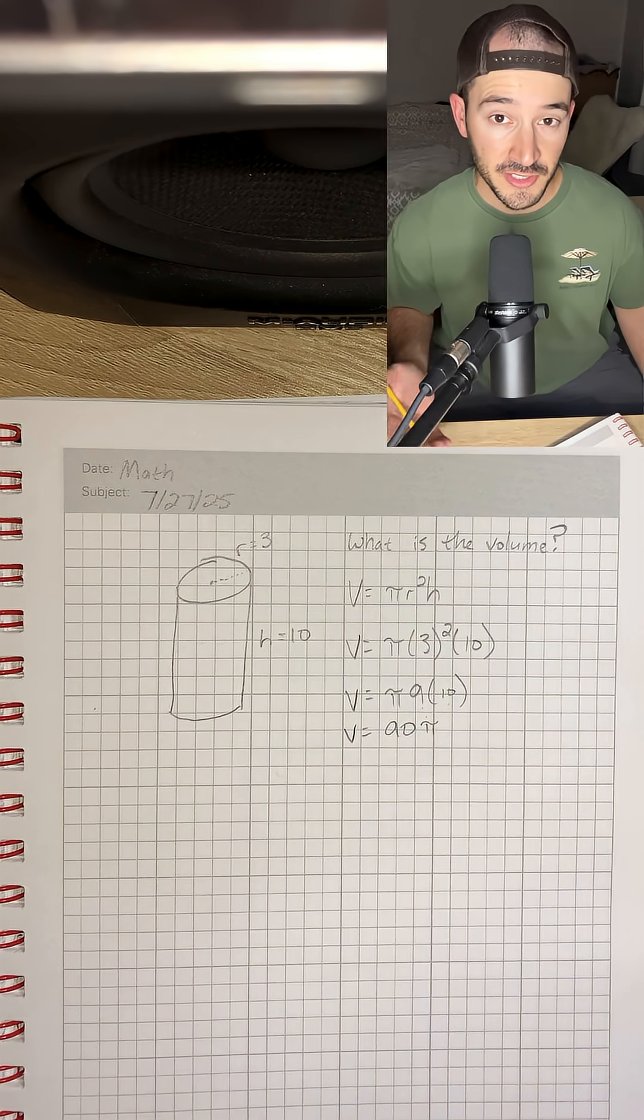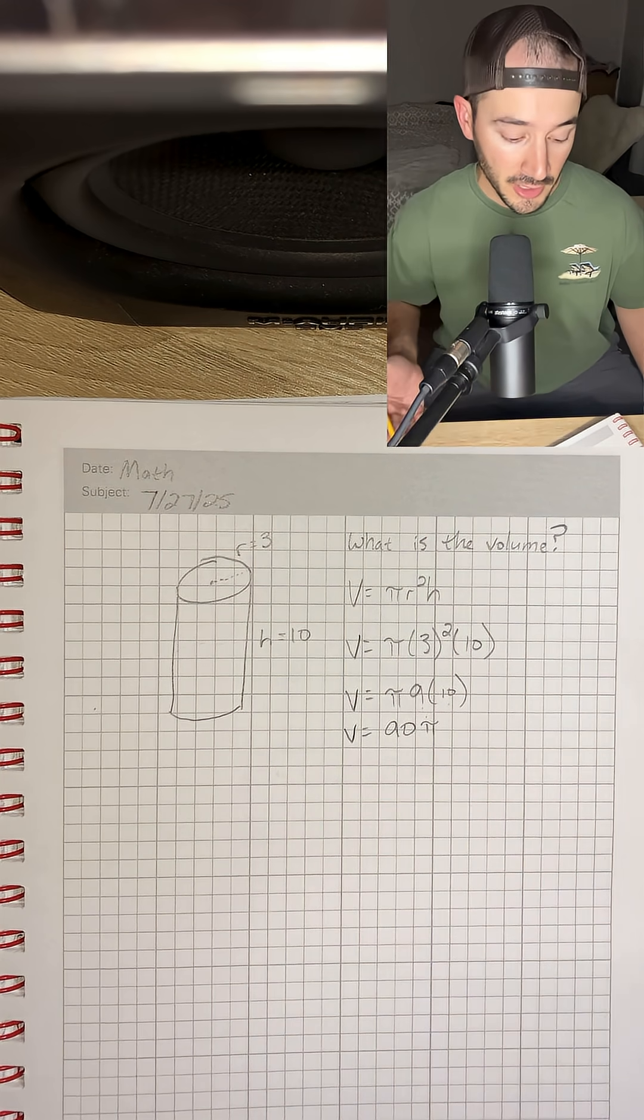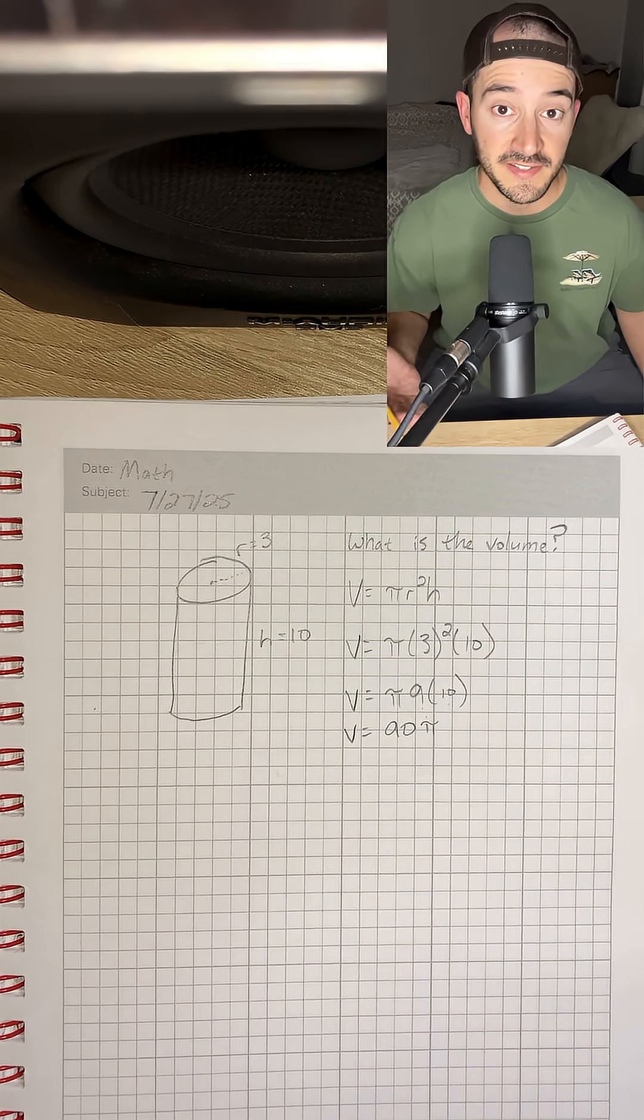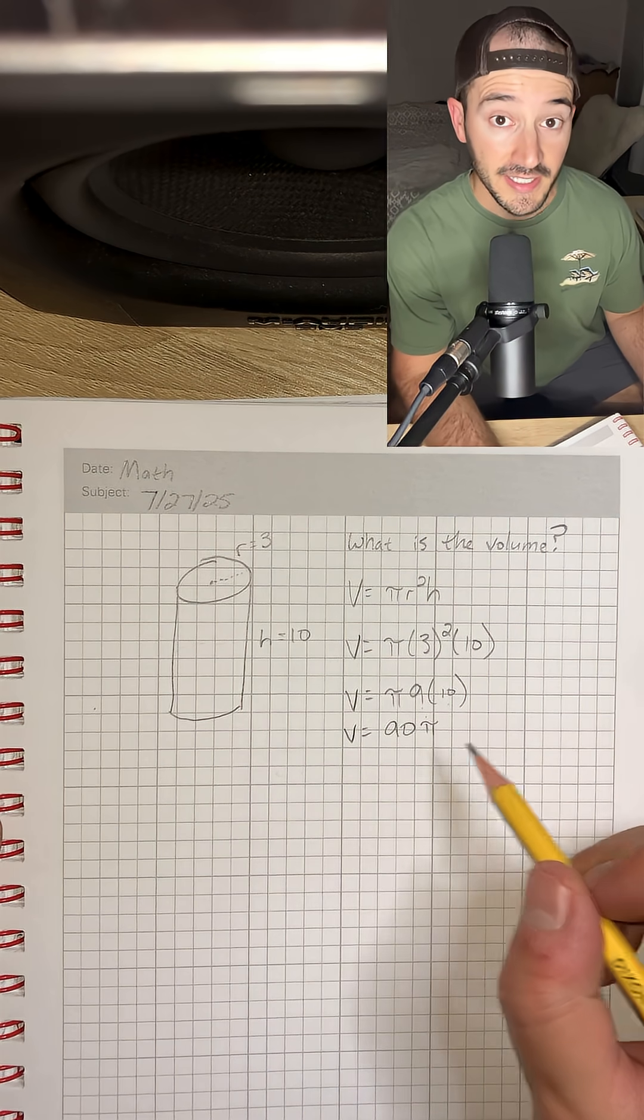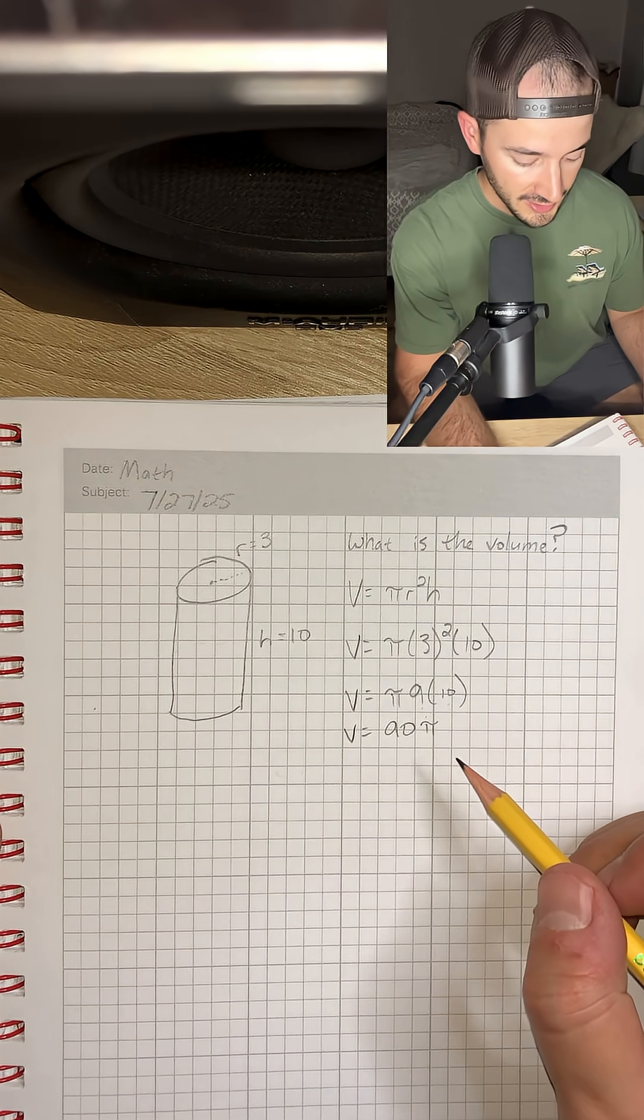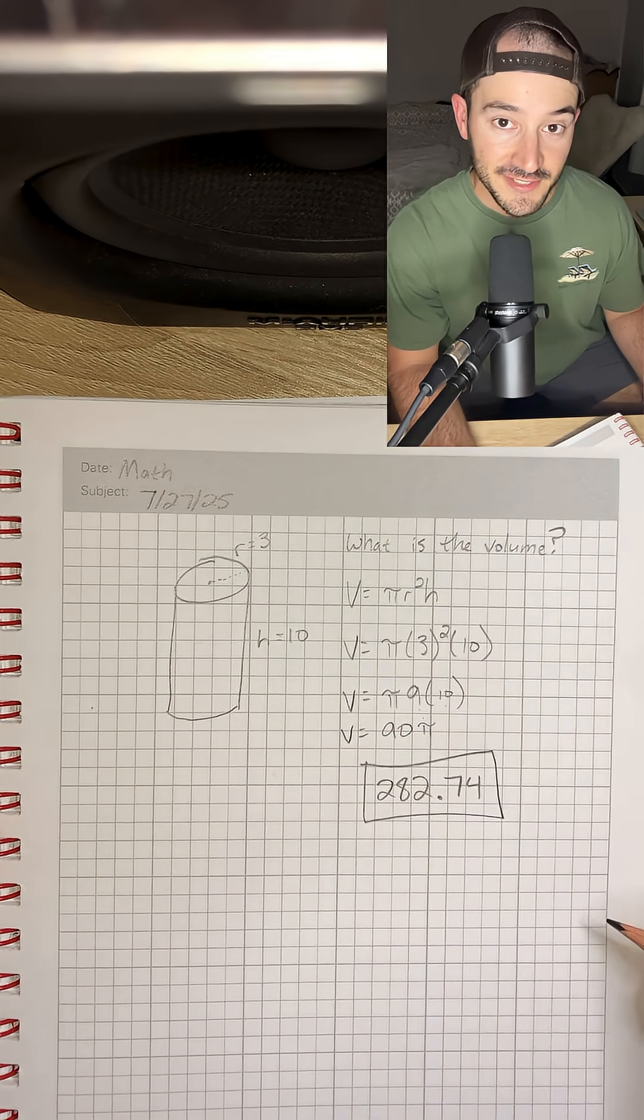So if you're asked to leave your answer in terms of π, then your answer would be 90π. But we can go ahead and also just get a decimal and that's going to be the actual number. So if we plug 90 times π into our calculator, we should get 282.74. And that would be our answer.